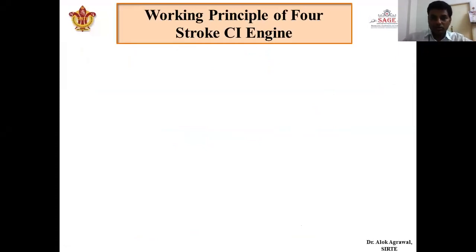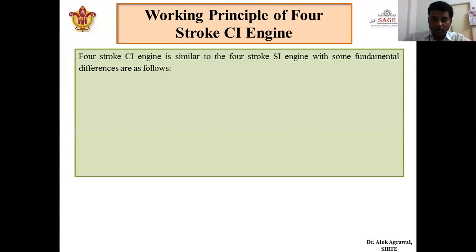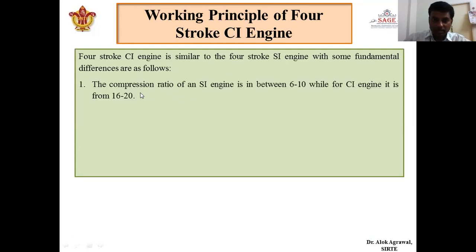To start with the working of the four-stroke engine, first we have to see the basic differences between the two cycles — that is the CI engine cycle and the SI engine cycle. The first difference is that in an SI engine the compression ratio is between 6 to 10, while that of a CI engine it is from 16 to 20.